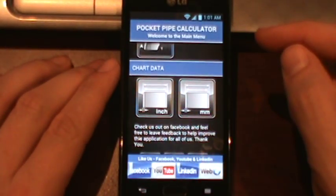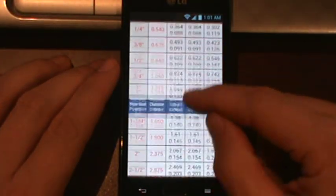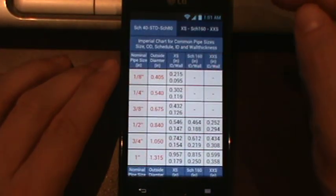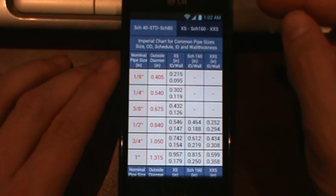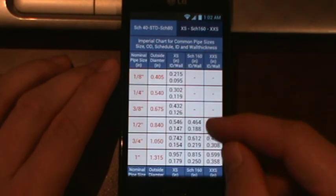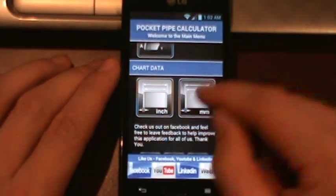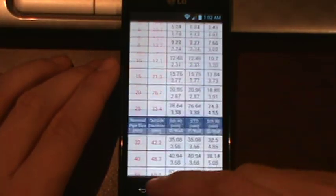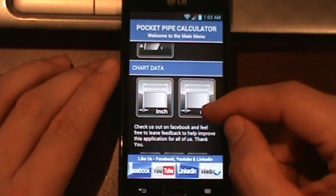Let's see, we'll click on pipe charts. As you run through, these are pretty standard in the apps. This is all imperial. You've got schedule 40 standard, schedule 80, extra strong, schedule 60, and double extra strong. Also comes in the metric values. Very handy to have. Keeps you from having to pull out your blue book.